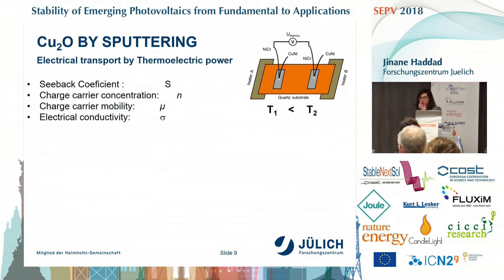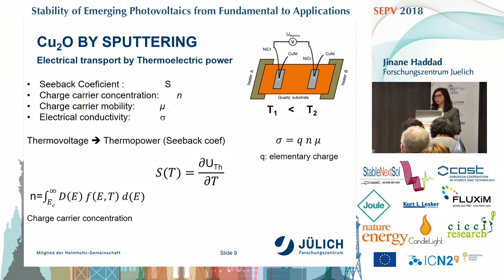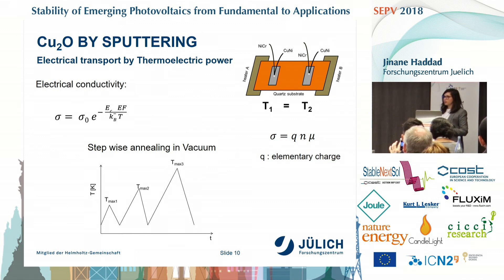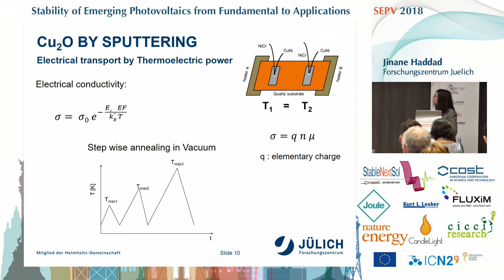We moved on to electrical transport characterization using thermal power equipment. With these measurements we can get the Seebeck coefficient, charge carrier concentration, mobility, and conductivity. In this setup we sputter our layer on quartz glass, evaporate two silver stripes, apply a temperature gradient with a bias, and measure the thermal voltage, from which we fit the thermal power and get the Seebeck coefficient and charge carrier concentration. Another measurement mode uses no temperature gradient or bias — instead we do a stepwise annealing in vacuum, going from 350 K to a first T-max, then back to 350 K, and so on, to obtain conductivity and mobility.